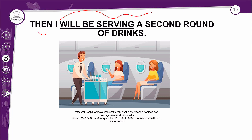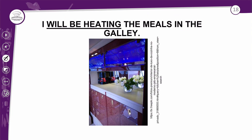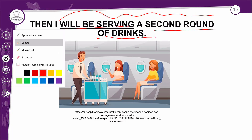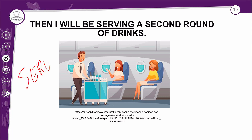'Then I will be serving a second round of drinks' — depois ela estará servindo um segundo round de drinks. Pela segunda vez ela estará passando com mais bebidas, e isso serve para a classe executiva. 'I will be heating the meals in the galley' — eu estarei esquentando as refeições na espécie de cozinha que tem lá no avião. O verbo 'heat' — esquentar — só acrescenta o ING no final. E o verbo 'serve' também termina com E: tira o E para colocar ING.